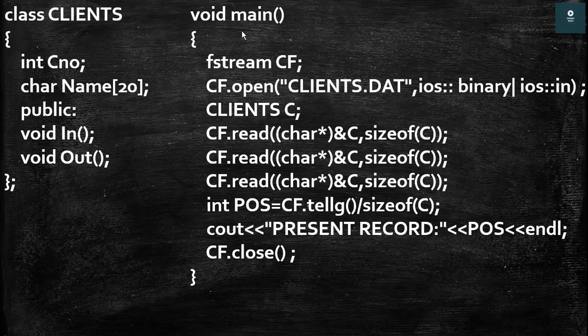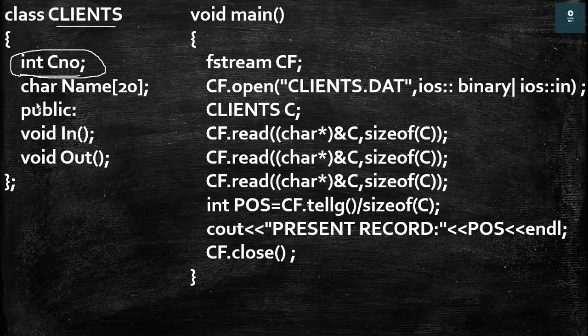In this question we are given a program and we have to find the output based on this program. In this program we have two parts: the first one is a class and the second one is the main function. In the class, the name of the class is 'clients' and we have two variables inside this class. The first one is an integer variable whose name is 'c_number' and then we have a character array whose name is 'name' and the size of this array is 20.